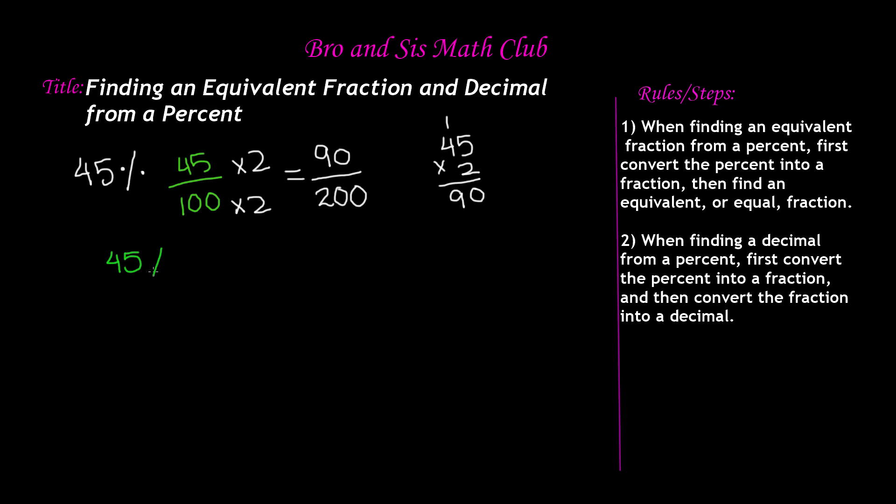Which is the same thing as if we write this as 45% is equal to 90 over 200. So this is the equivalent fraction we get from 45%. So this is how you find an equivalent fraction from a percent.